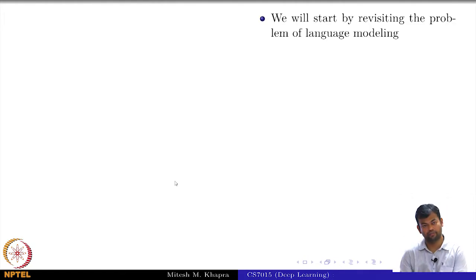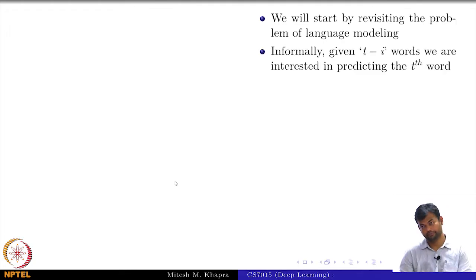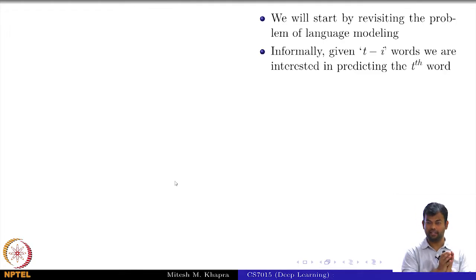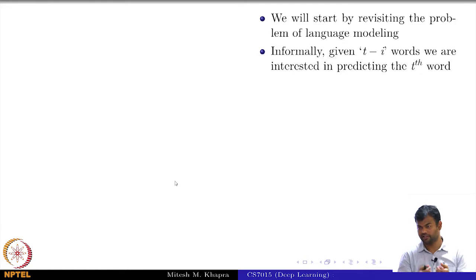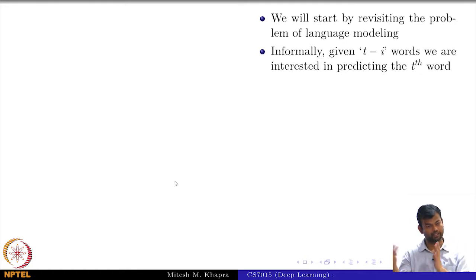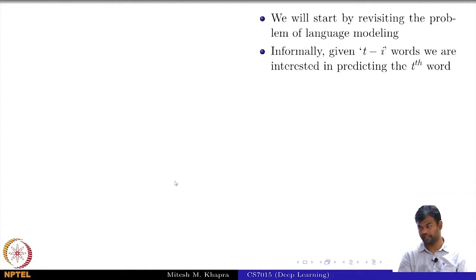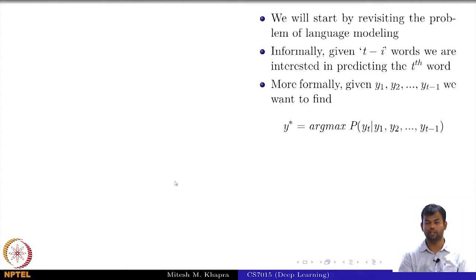We will start by revisiting the problem of language modeling. The problem of language modeling is that you are given some t minus 1 words or characters and you want to predict the t-th word or character. This is like autocomplete — whenever you are typing something, you have typed 4 words and you want to predict the 5th word, or 4 characters and you want to predict the 5th character.